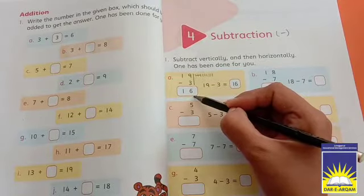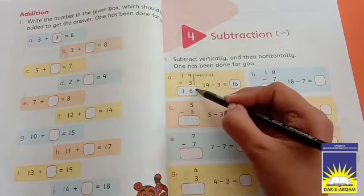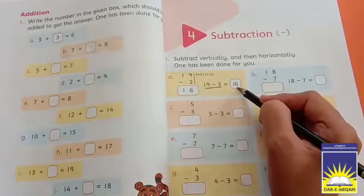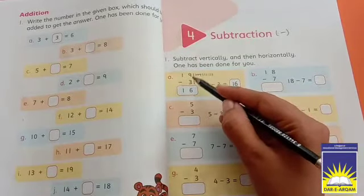So the answer will be nineteen subtract three equals 16. If we subtract three numbers from nineteen, which answer will we get? We will get 16. This is vertical subtraction. The answer here will be the same, but the direction changes.